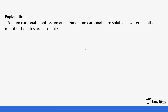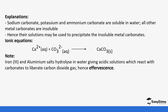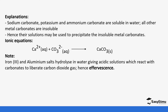Sodium, potassium, and ammonium carbonates are soluble; other carbonates are insoluble, so their solutions can be used as precipitating agents. The iron(III) and aluminium salts hydrolyze in water giving an acidic solution, which reacts with the carbonate to liberate carbon dioxide. This is why both iron(III) and aluminium salts give off carbon dioxide when carbonate is added — it is an exception and is different from the others.